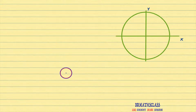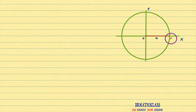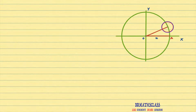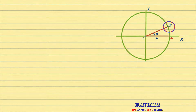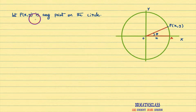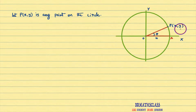Now observe this diagram. I considered a circle with center O and radius R. This is the initial ray OA. I rotate OA through an angle θ so that the ray OB is formed. P is any point on the circle. Let P(x, y) be any point on the circle.